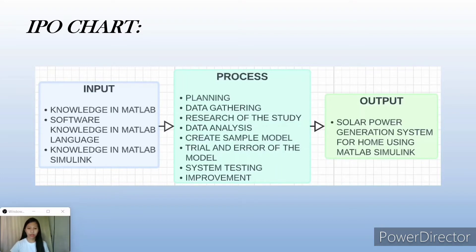Once the trial succeeded with no errors, the system will then be tested to check if everything is functioning well. The last step would be the improvement of the model for a better outcome and for the study to become effective and feasible. For the Output, the last step of the study is the completion of the input and process — the solar power generation system for home using MATLAB Simulink is done.